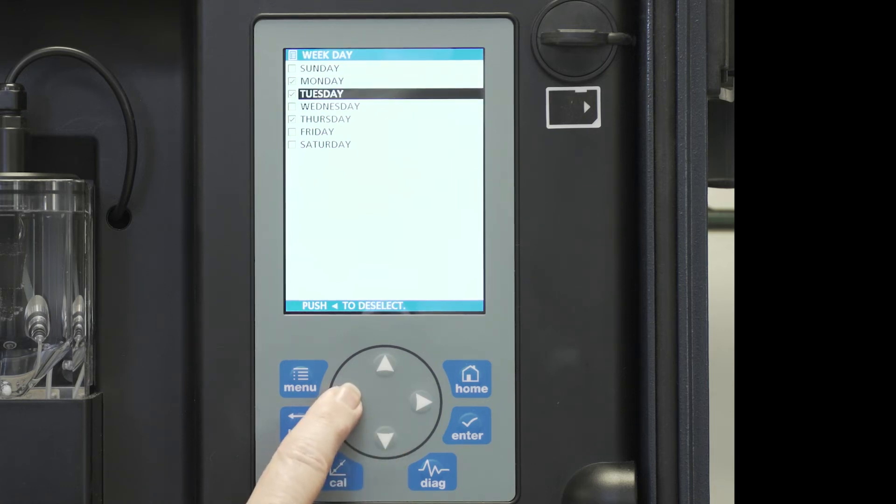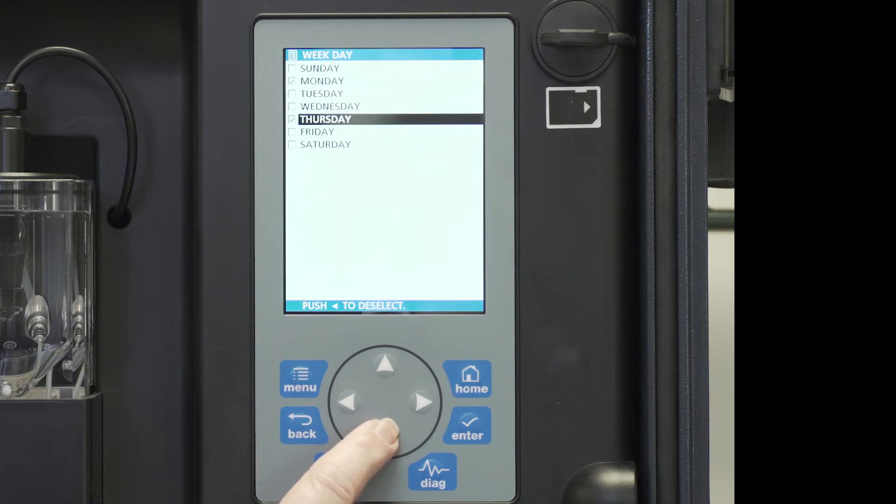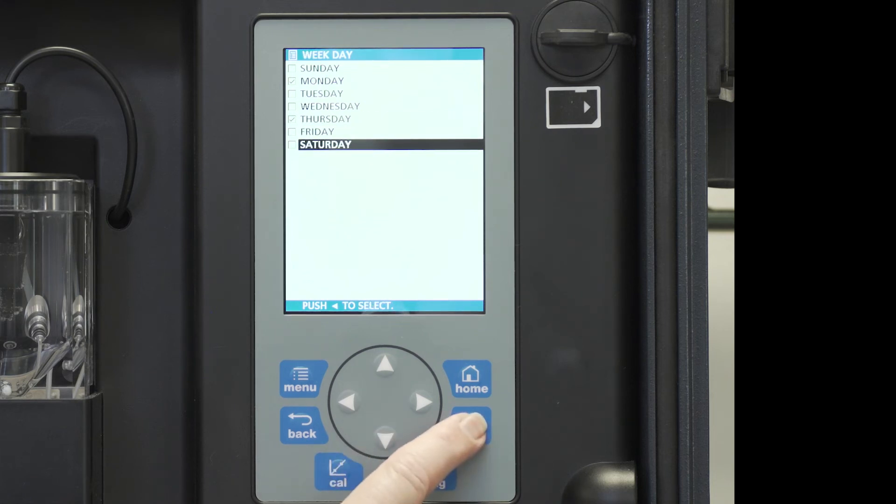I want to deselect Tuesday. Wednesday has already been deselected. Thursday is what we select. And we press enter.